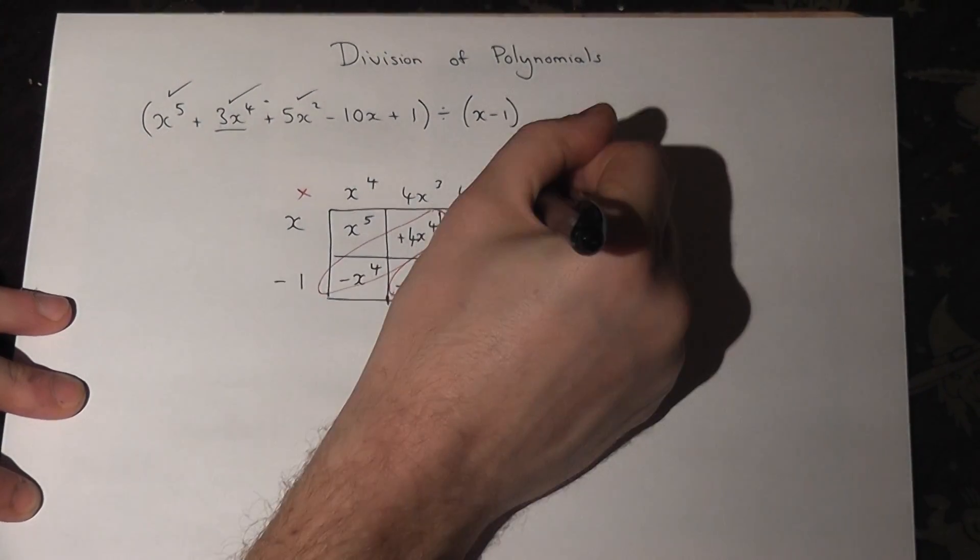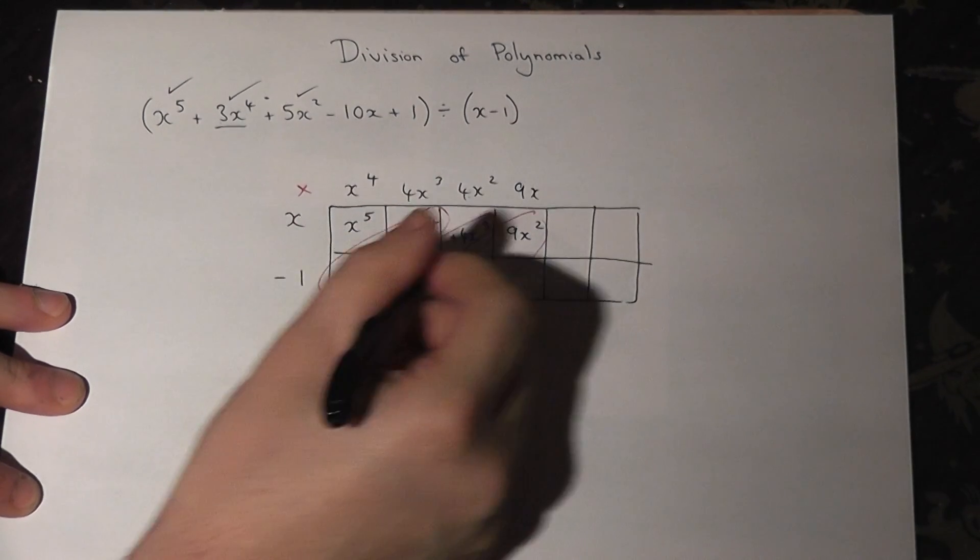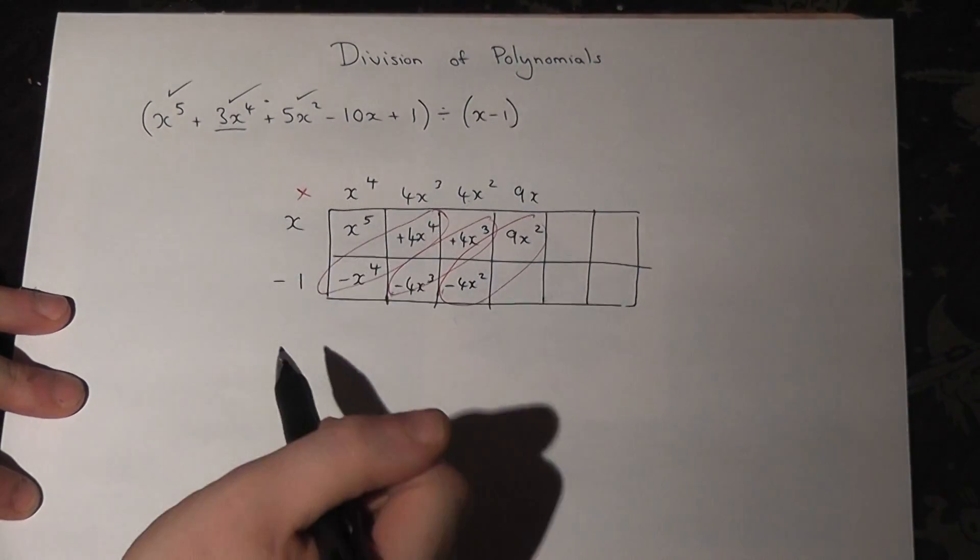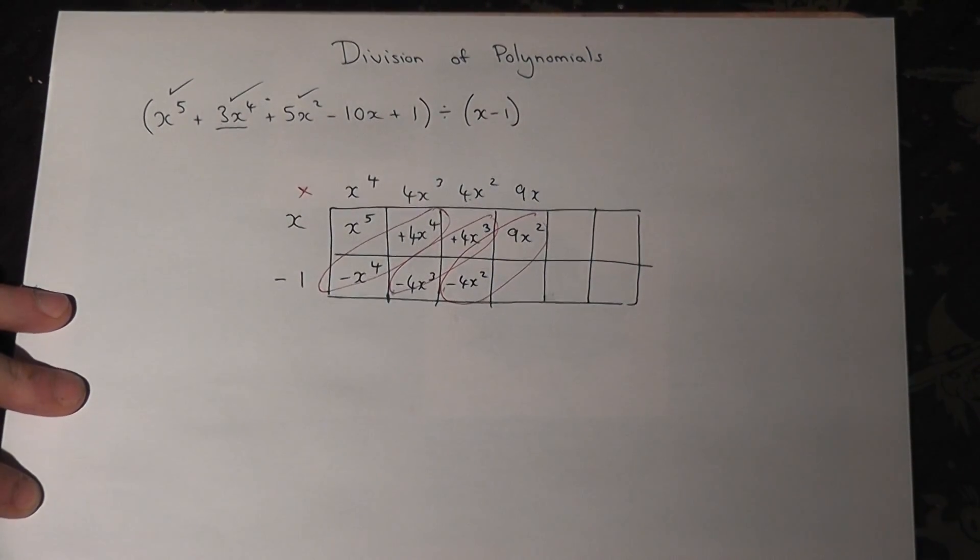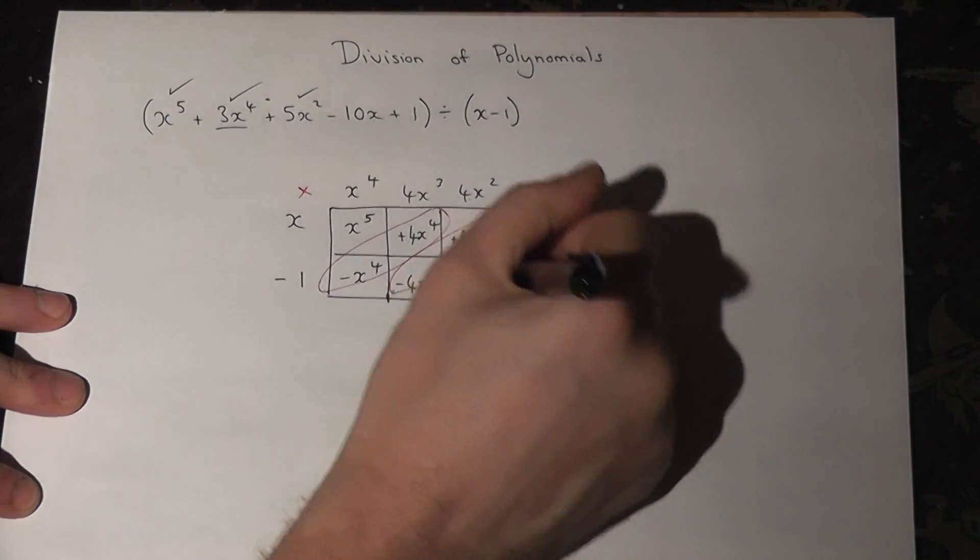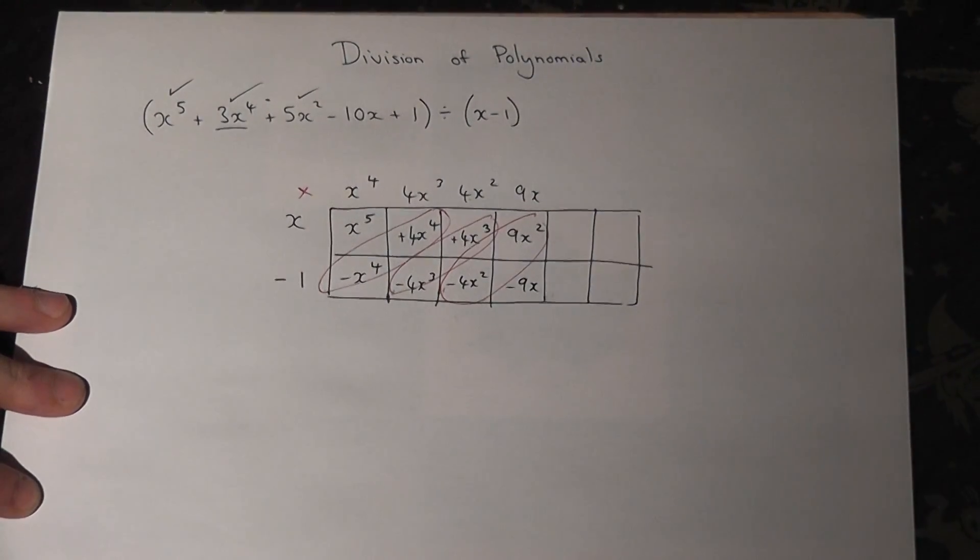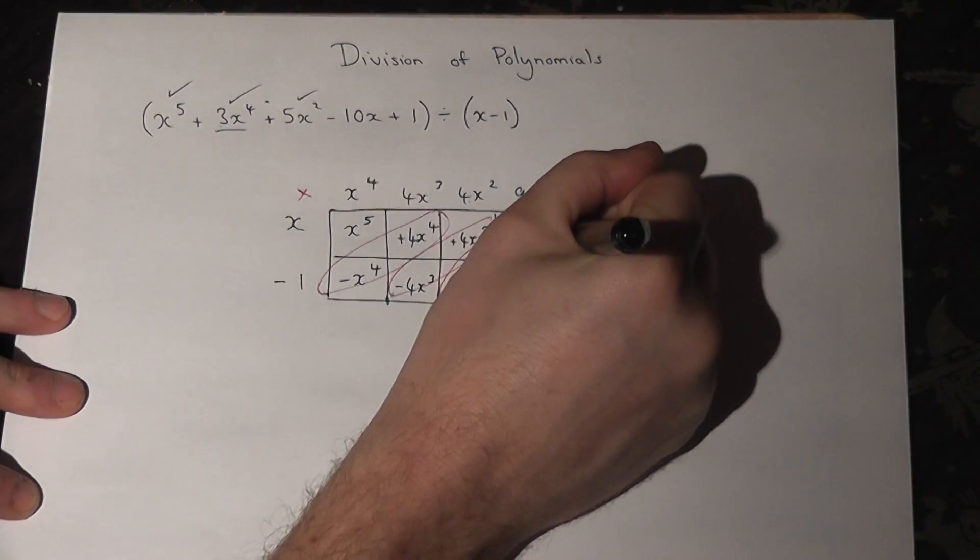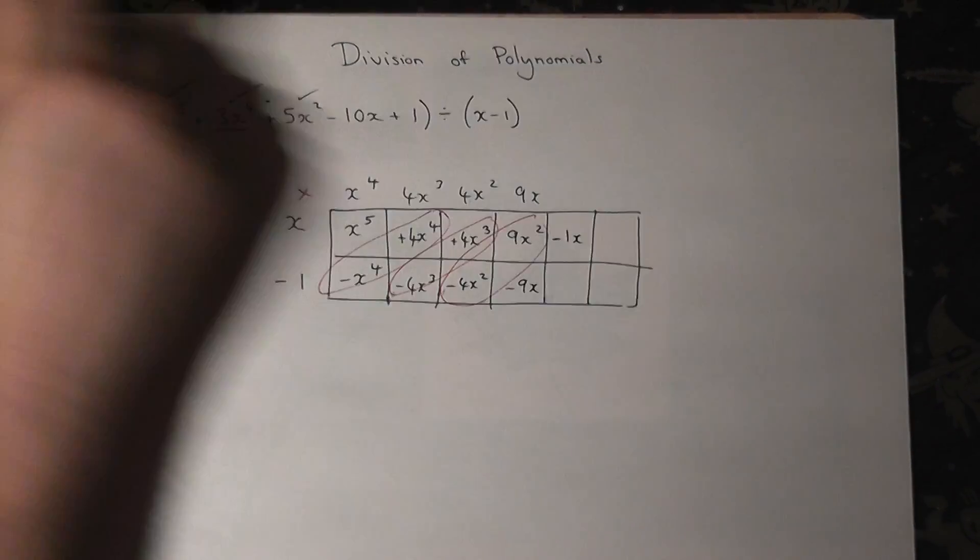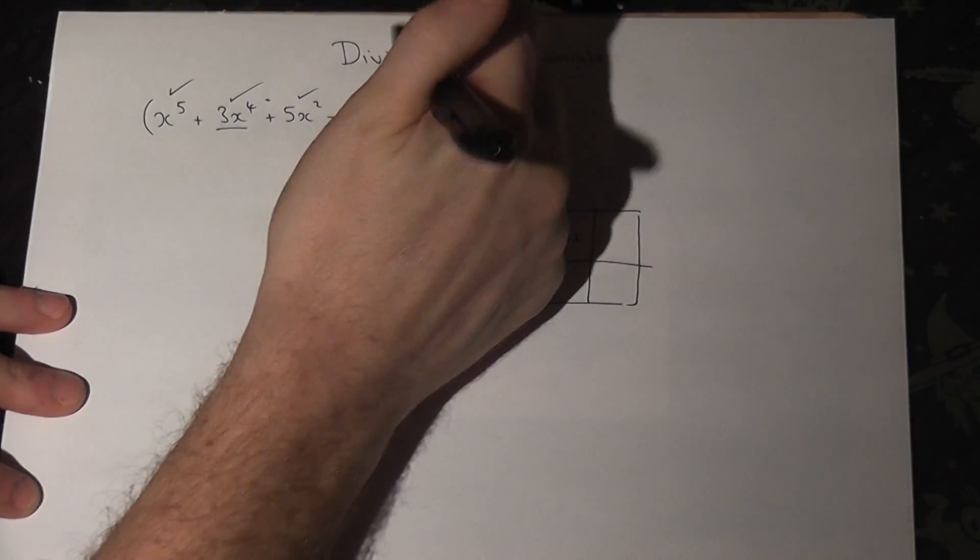But there's an x here, so that needs a 9x, because x times 9x is 9x squared. But minus 1 times 9x is minus 9x, and I need a minus 10x, so I must take away another x because that gives us our 10x.